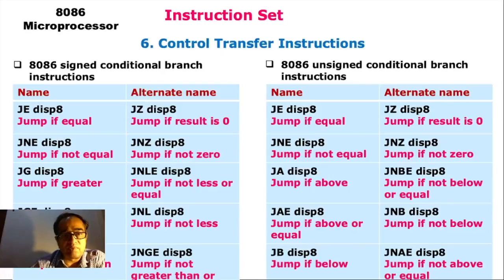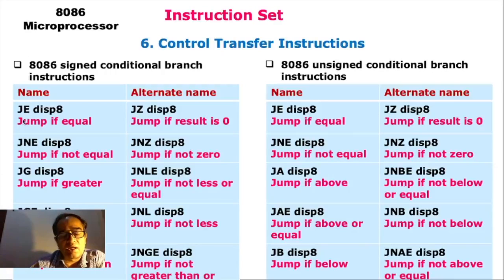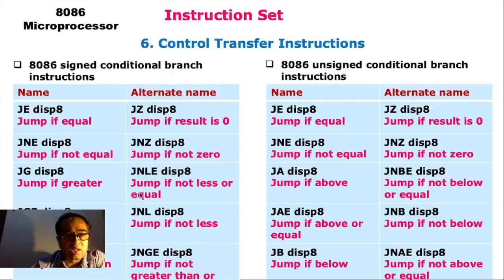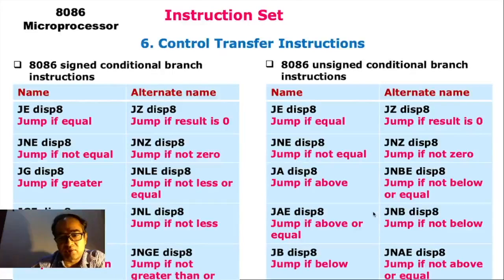Some of the signed and unsigned control branch instructions include: jump if equal, jump if result is zero, and so on — similar to what we have seen in the 8085 microprocessor. These include jump if equal, jump if not equal, jump if greater, jump if less, jump if greater than or equal, jump if less than, jump if greater than, jump if not greater than or equal, and so on.